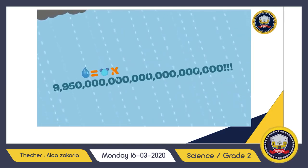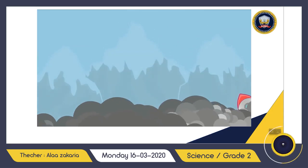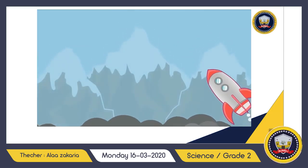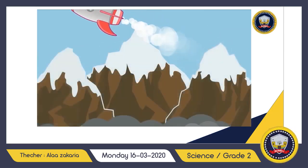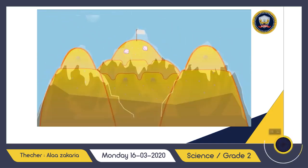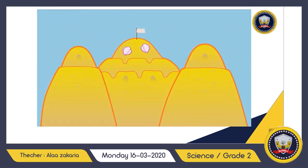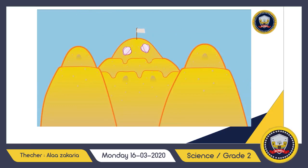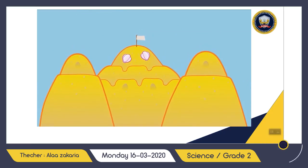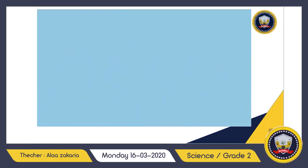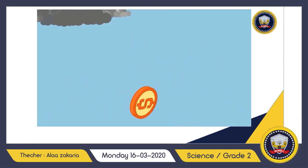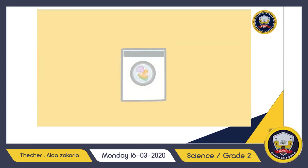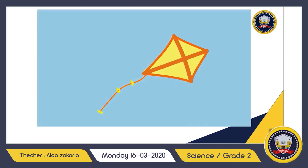Matter can be any size. It can be the size of a rocket, as huge as a mountain, or as tiny as a grain of sand. Different objects have different amounts of molecules and atoms. The kinds of atoms and molecules in matter make some things shiny, some things heavy and hard, and some things light and soft.